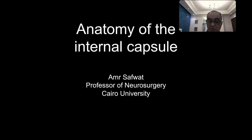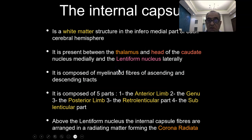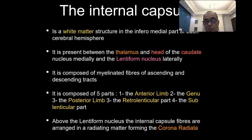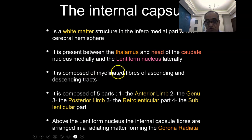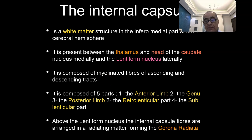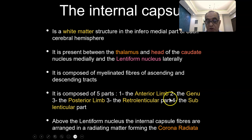The internal capsule is a white matter structure in the inferomedial part of each cerebral hemisphere. It is present between the thalamus and head of the caudate nucleus medially — thalamus posterior and head of caudate anterior — and the lentiform nucleus laterally. It is composed of myelinated fibers of ascending and descending projection tracts going up to and down from the cerebral cortex, and it is composed of five parts: the anterior limb, the genu, the posterior limb, the retrolenticular part, and the sublenticular part.